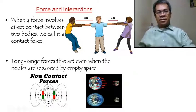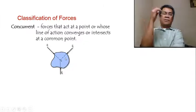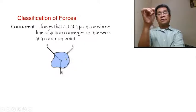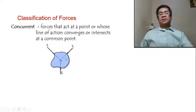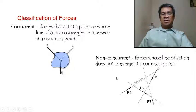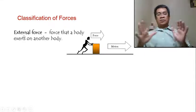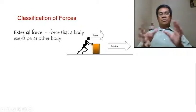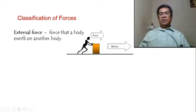Forces can be classified as concurrent — where all forces act on a single point — or non-concurrent, where forces have no common point of convergence. External forces are forces applied between objects that react on one another: if you push an object, you apply an external force, and the object applies an external force back on you.